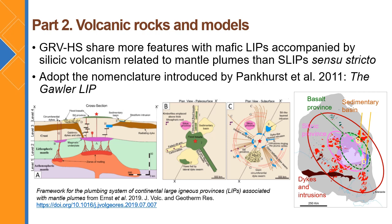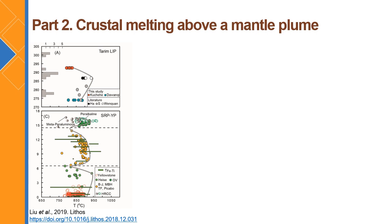Here we have some diagrams illustrating the plumbing systems for continental large igneous provinces associated with mantle plumes. These are from Richard Ernst, published a couple of years ago, showing a cross-section and a plan view of the different components within these large igneous provinces and also the components we see in the Gawler Range Volcanics. We can see they share common features of a basalt province, a silicic province, peripheral small sedimentary basins, and a peripheral distribution of dykes and intrusions around the basalt and silicic province, suggesting a mantle plume may have been involved in the formation of the Gawler Range Volcanics.